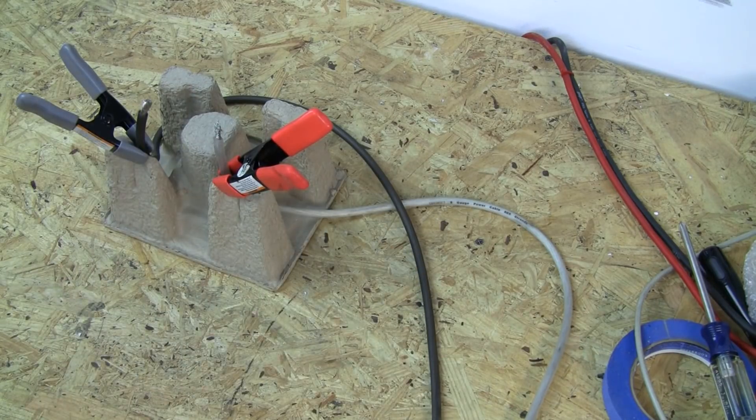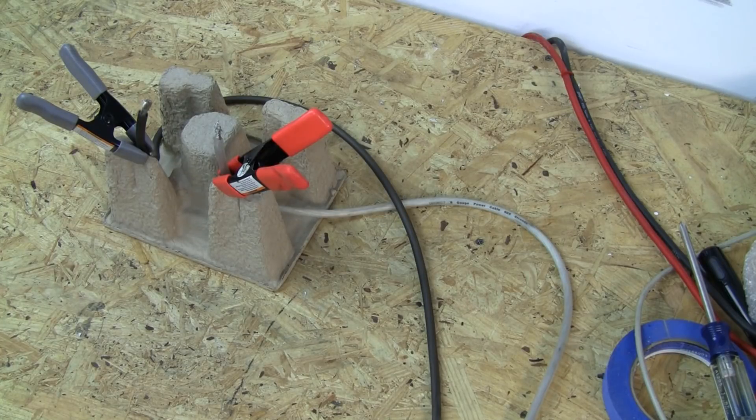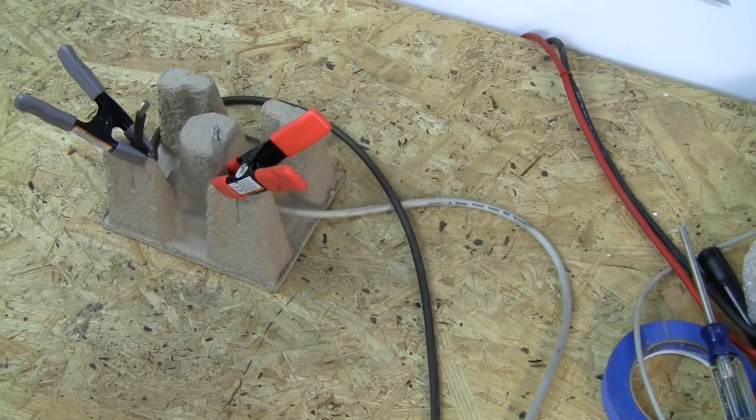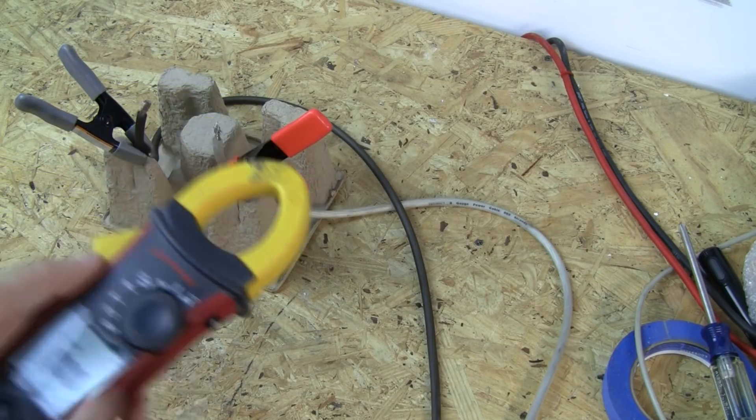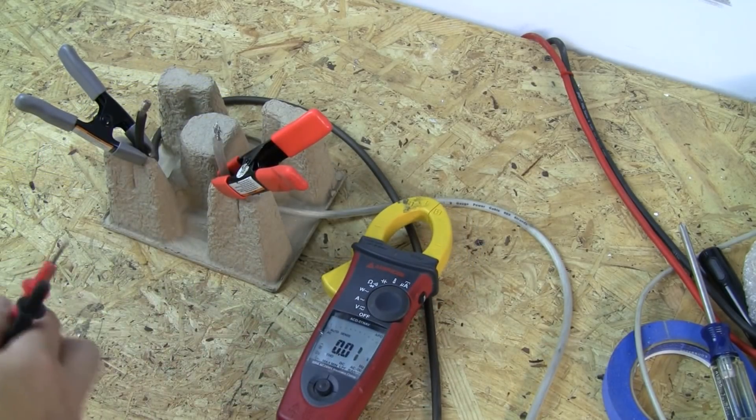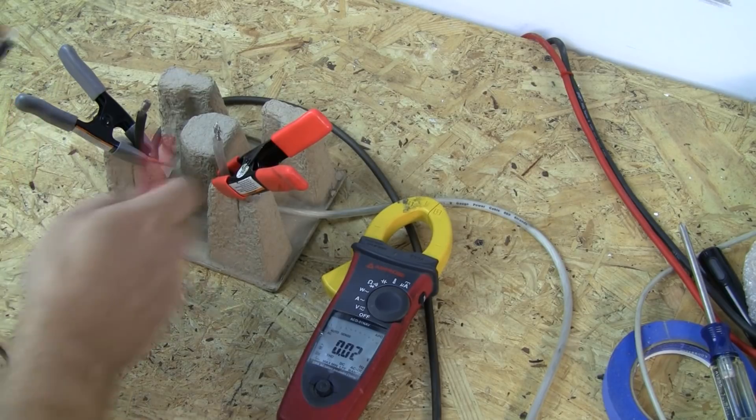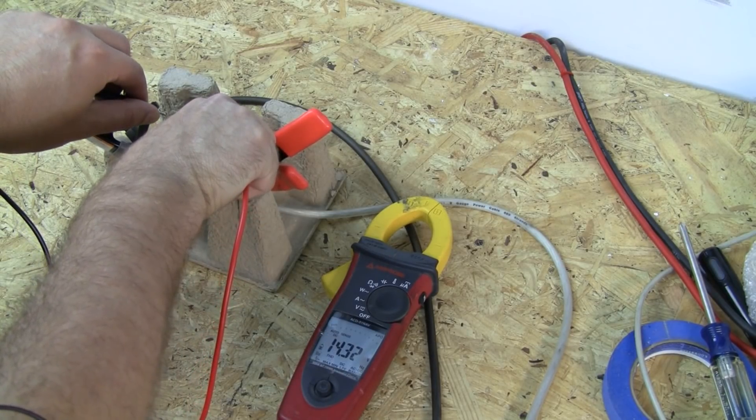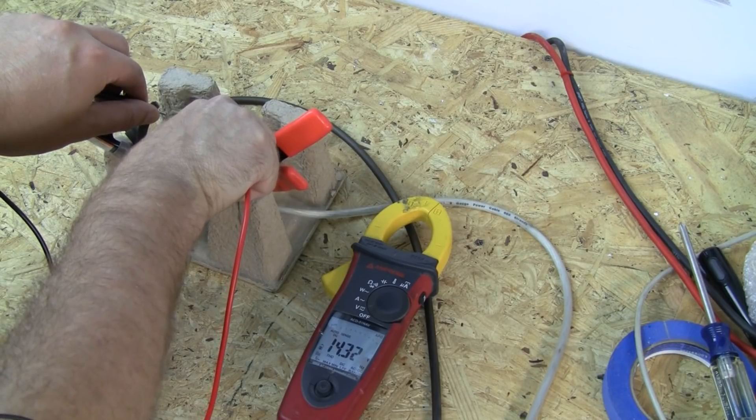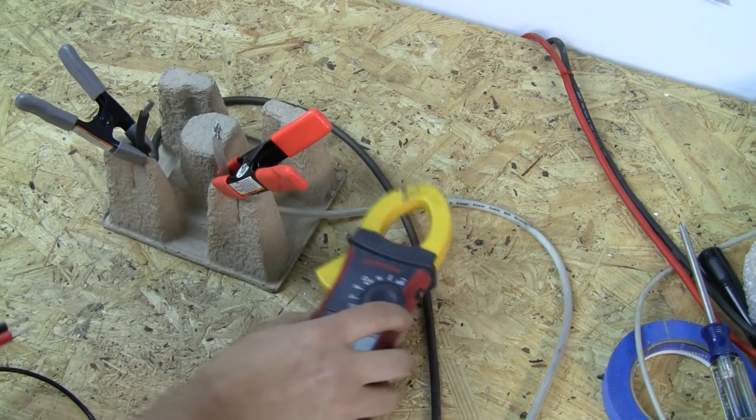Fluke is generally kind of the standard as some people put it. So you would expect that that would be the most accurate. Next up we have an Amprobe that is also a current clamp. And this one we have 14.32 volts, so right in line with the Fluke.